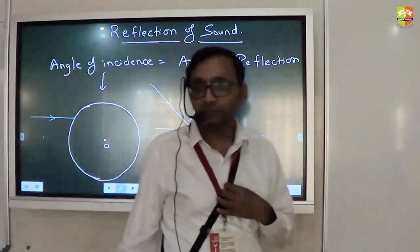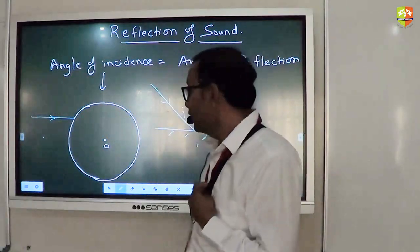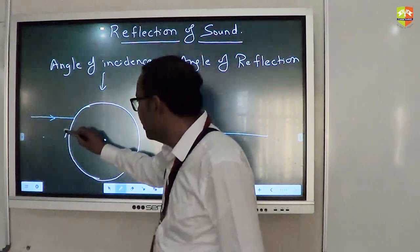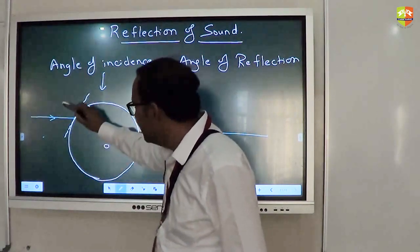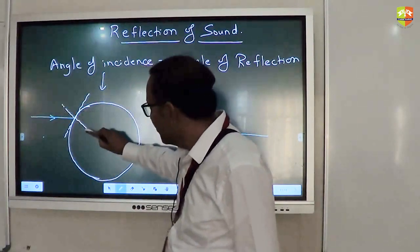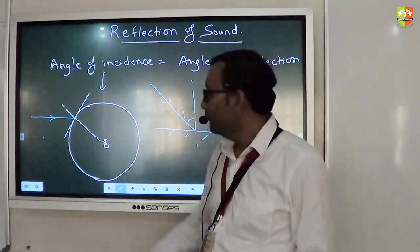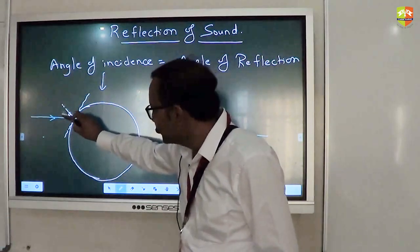So angle should be between the incidence direction and the normal. This line represents the incidence direction. Where is normal? The perpendicular to the tangent. Right. So you draw a tangent. There is a common way of drawing normal. You draw a tangent. Then draw a 90 degree to it. It will pass to the center of the circle. So this is the angle of incidence.